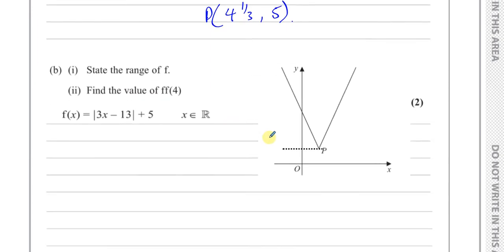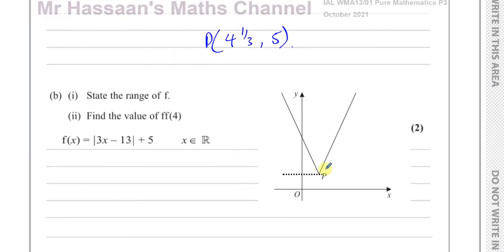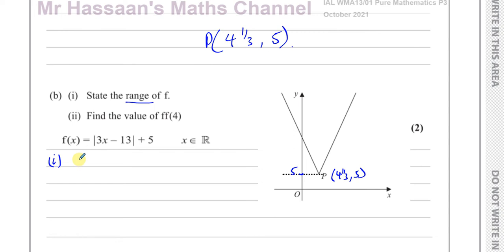Part b(i) says: state the range of the function f. The range means the values f can take in the y direction. We know the vertex is at 4 and one third, 5, so the lowest the function ever reaches is 5. It will never go below this point. So the range of f of x is f of x greater than or equal to 5.